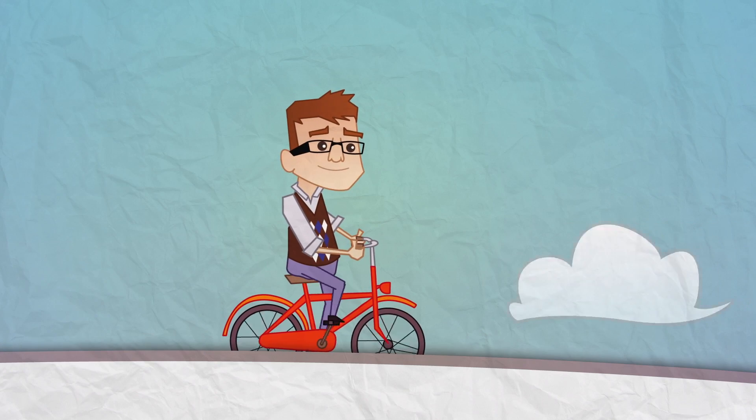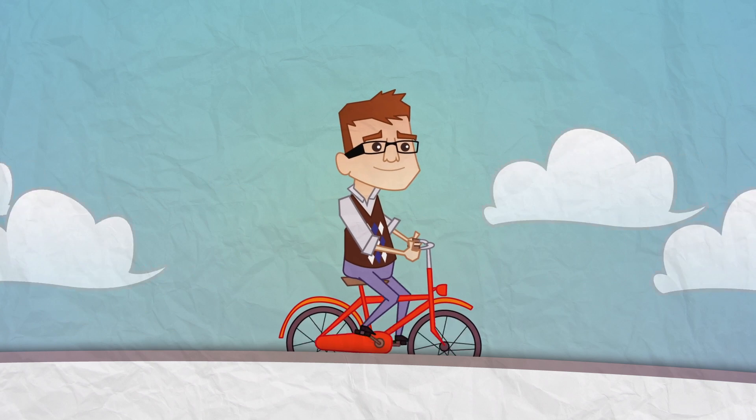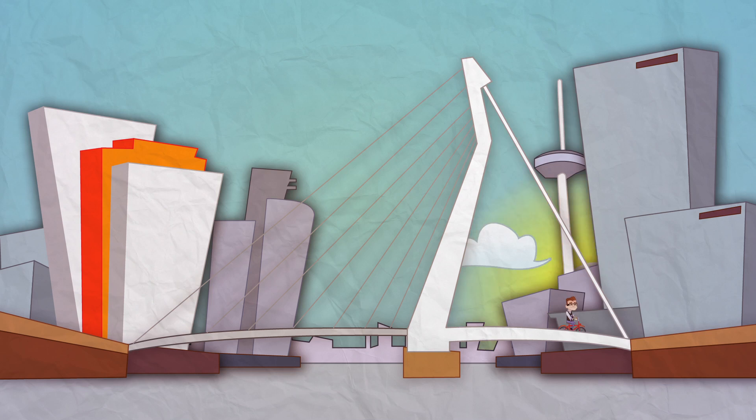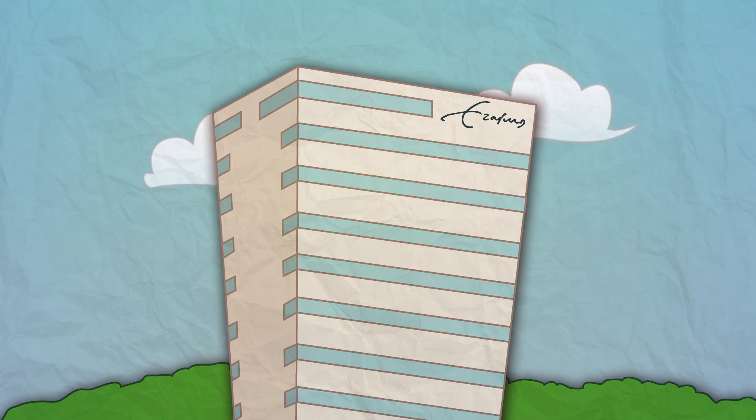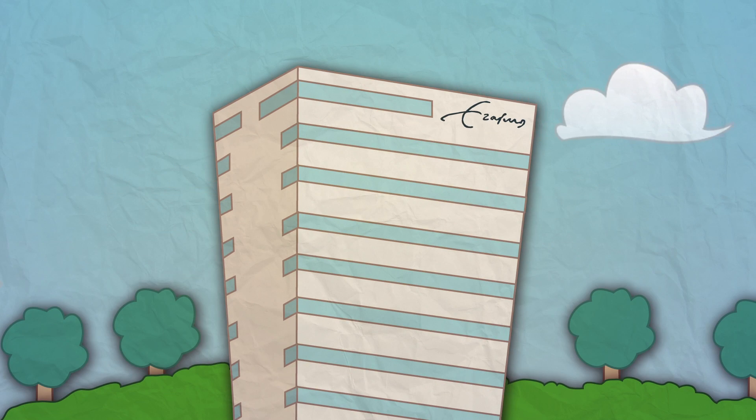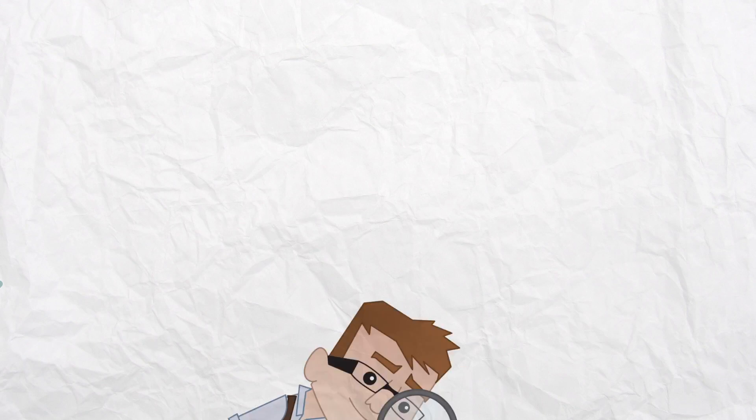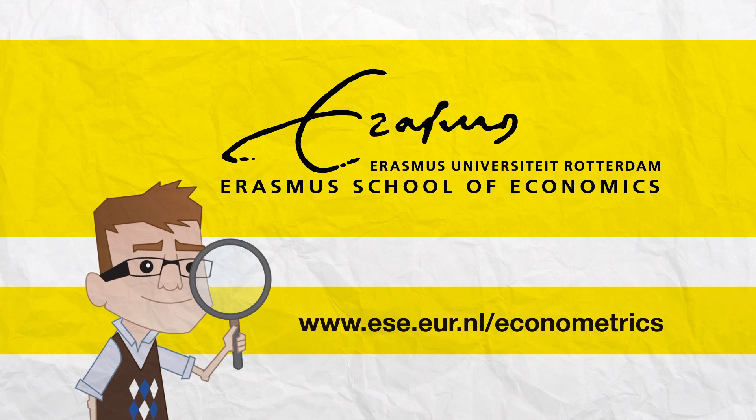So, where should you get started? Well, Rotterdam, of course. Holland's no-nonsense city. And check out econometrics and operations research at the Erasmus School of Economics. The place to learn econometrics. The Dutch way.